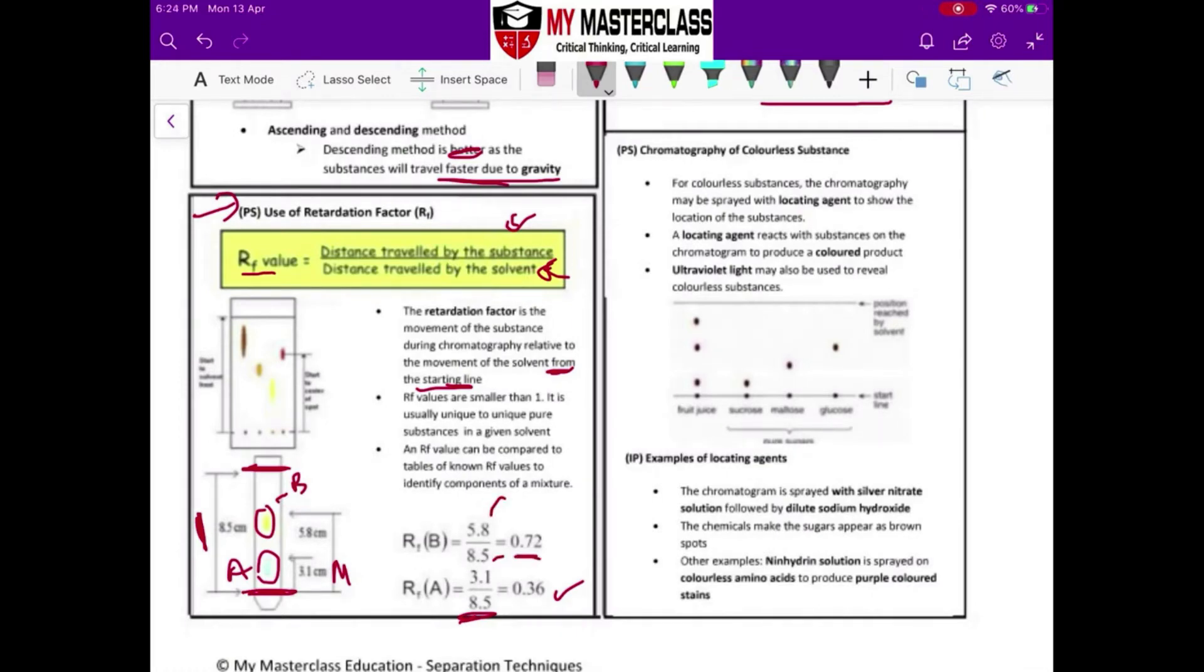Why is this RF value important? It's because scientists have actually done a lot of chromatography and then they publish a book. So for example, if I want to know this is a pure red dye, the RF value is going to be, for example, 0.72 in water.